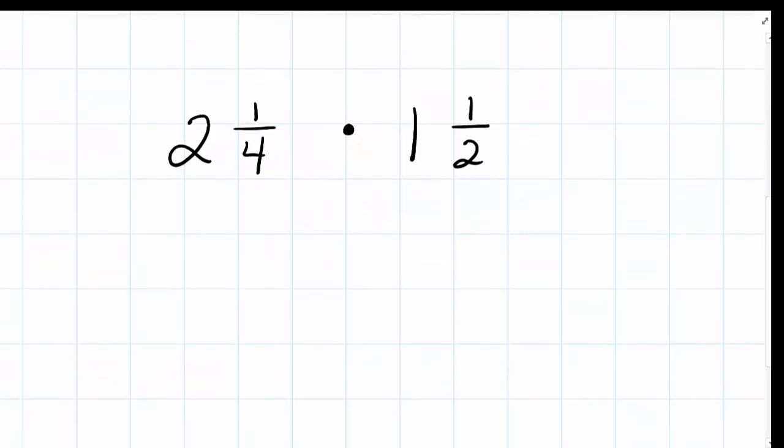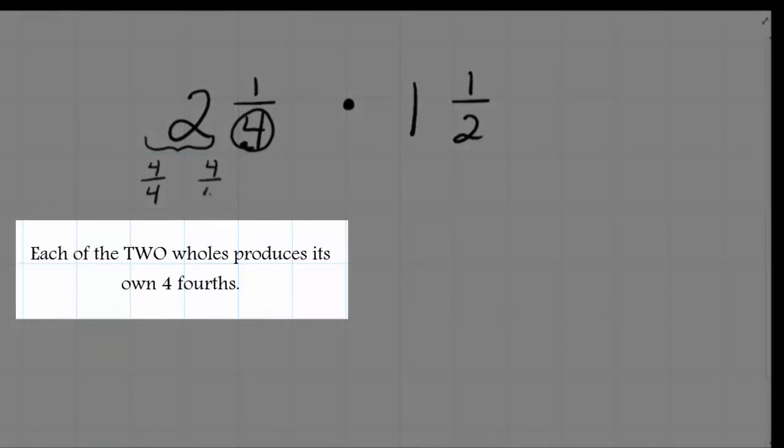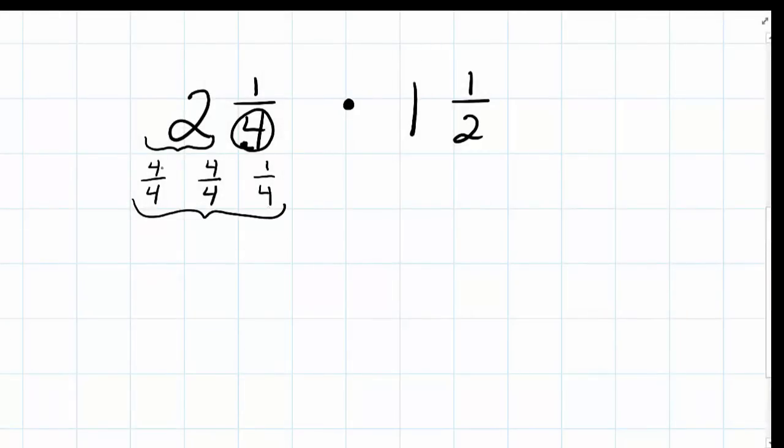The more difficult one was 2 and 1 fourth and 1 and 1 half. So let's take a look at what this number 2 really means. Here's our denominator of 4. If I have 2 wholes, that means I have 2 four fourths, and then I have a 1 fourth at the end. So how many fourths do I have total? Let's add them up: 4, 8, 9. So I have 9 fourths as my mixed number.